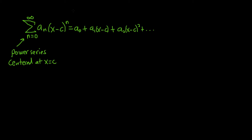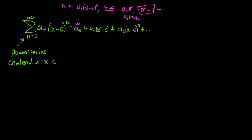There's something really interesting and subtle that can be explained via this definition. Notice that when you plug in n equals zero, you get a sub zero times x minus c to the zero. If x is equal to c, you would get a sub zero times zero to the zero. We define zero to the zero to be equal to one — otherwise this mathematics completely fails. So you have to define zero to the zero to equal one.